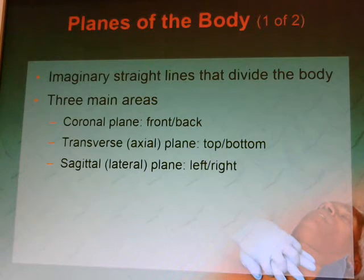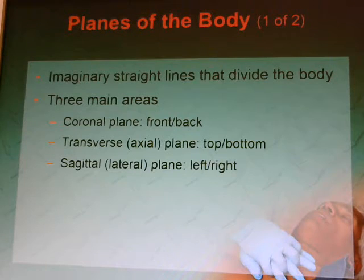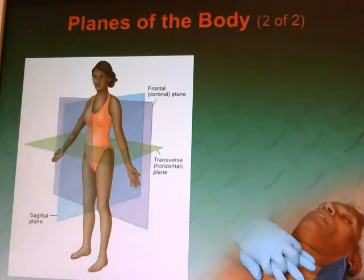There are three main planes. The coronal plane divides the body front and back. The transverse or axial plane divides you top and bottom, right at or above the belly button. You also have the sagittal or lateral plane, which divides your body into right and left halves.